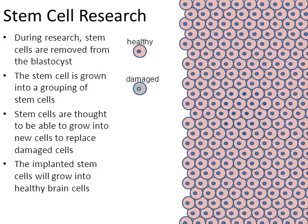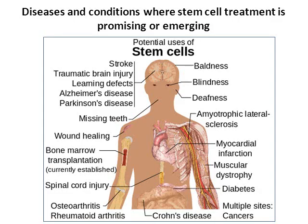In that example, the stem cells became brain cells, but research is promising in other areas as well. Pause the video to check out the chart in more detail — it lists diseases and conditions where stem cell treatment is promising or emerging, including traumatic brain injury. We're also seeing that stem cells can be turned into muscle cells to help people with muscular dystrophy, among many other promising stem cell therapies.